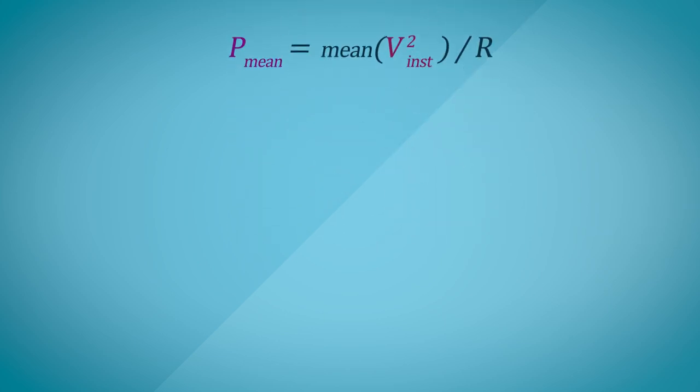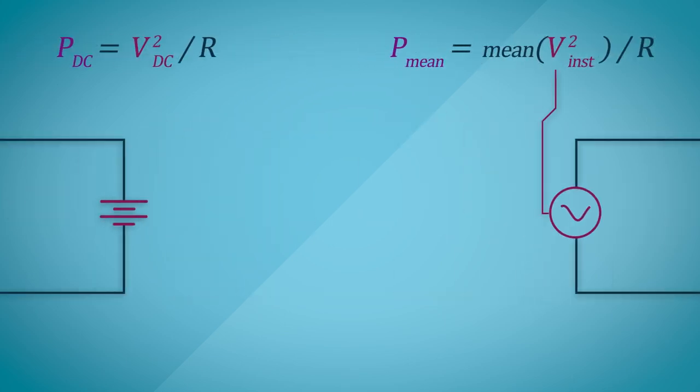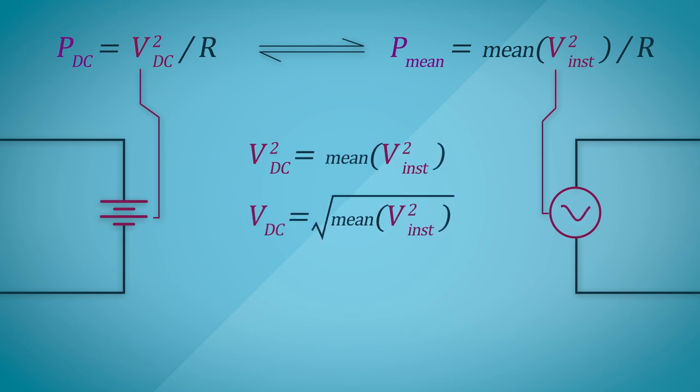In essence, what we are theoretically trying to do here is to replace an AC source with an equivalent DC source, such that the average power drawn by the bulb would be the same in both cases. If we go by that principle, the equivalent DC source would be equal to the square root of the mean of the squares of the instantaneous AC voltage. And this is where the term RMS comes from. It is the root of the mean of the squares.